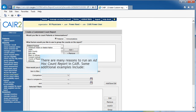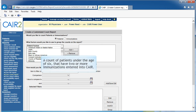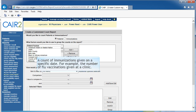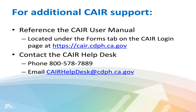There are many reasons to run an Ad Hoc Count report in CARE. Some additional examples include a count of active patients associated to your organization, a count of patients under the age of six that have two or more immunizations entered into CARE, and a count of immunizations given on a specific date — for example, the number of flu vaccinations given at a clinic. In summary, the Ad Hoc Report function in CARE allows a user to create customized reports. The Ad Hoc List report produces lists with information about selected patients, and the Ad Hoc Count report produces counts of either patients or immunizations. For additional CARE support, you can reference the CARE User Manual located under the Forms tab on the CARE login page, or contact the CARE Help Desk at 800-578-7889 or email carehelpdesk@cdph.ca.gov.